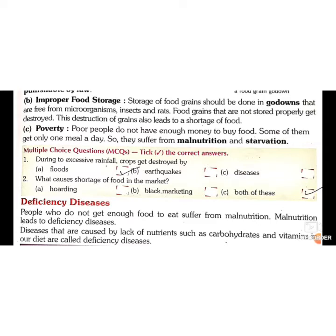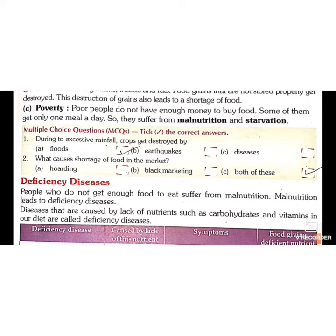Grains should be dried properly and the godown should be free from microorganisms, insects, and rats. In India, many people do not have enough money to buy food and some get only one meal a day, so they suffer from malnutrition and starvation. Malnutrition is a condition in which people do not get a proper amount of food, and starvation means shortage of food.